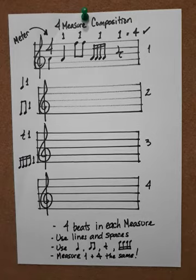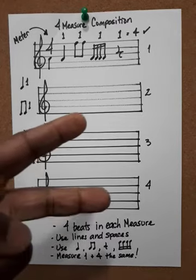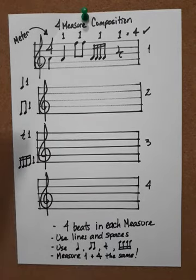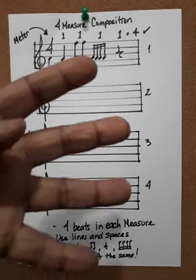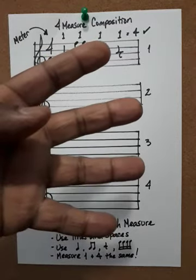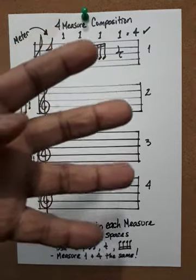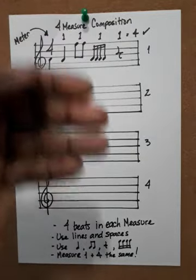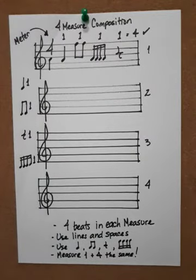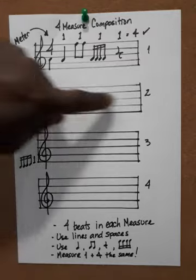Now to your assignment. You have two assignments. Remember, you have to write four measures and the measures have to have rhythms and they have to use the lines and spaces. Remember what I'm talking about?